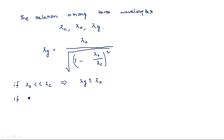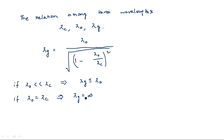Consider the second case: if lambda naught equals lambda c, that is, the free space wavelength equals the cutoff wavelength. In the formula, the term (lambda naught / lambda c) becomes 1, so we get 1 minus 1 equals 0 under the square root. Lambda naught divided by 0 gives infinity, so lambda g becomes infinite. That means the wave travelling in the rectangular waveguide has an infinite wavelength.